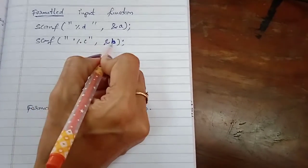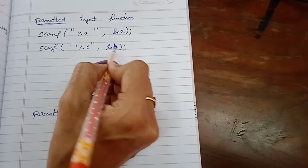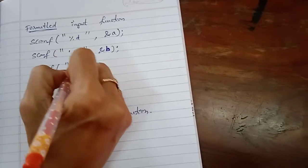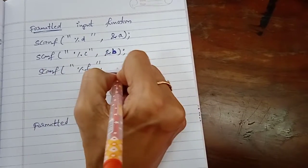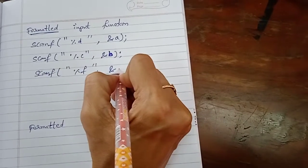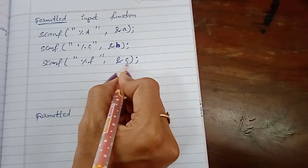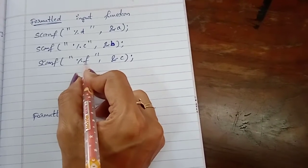Character B. That means it accepts one character as an input. Same as you can use %f, that is floating value to input. That means in the variable C you can input the floating value.